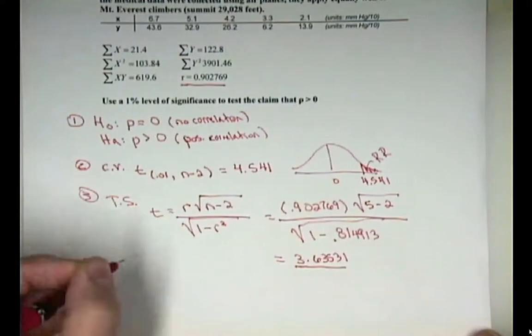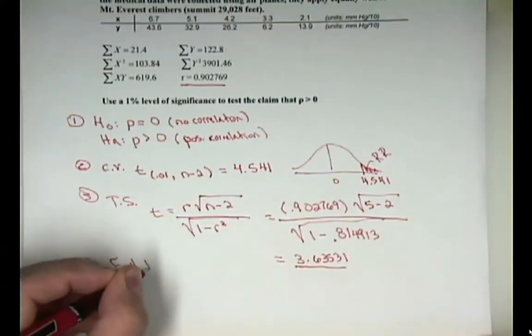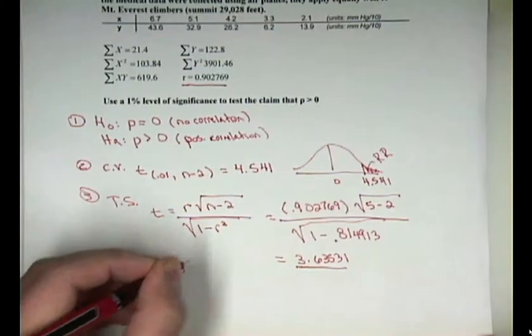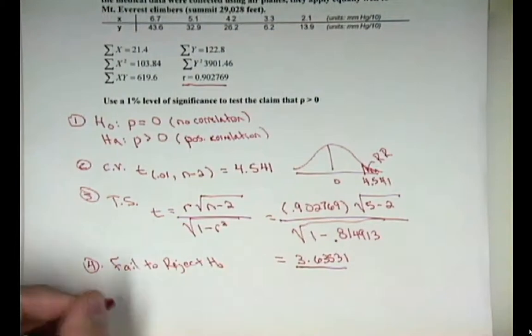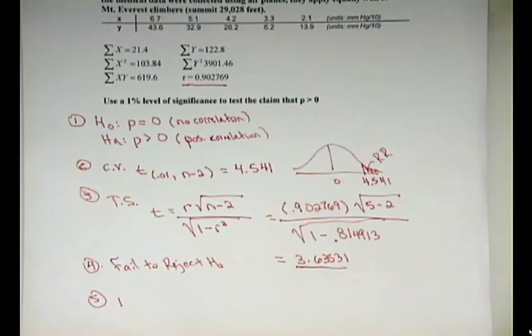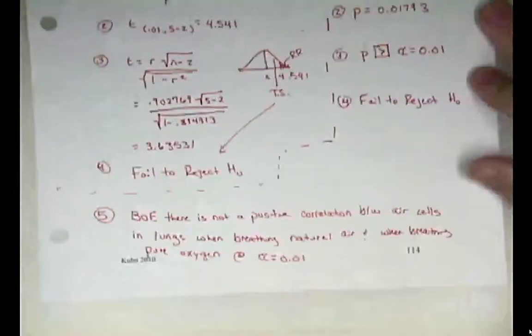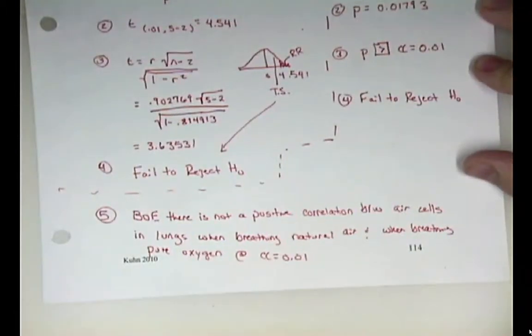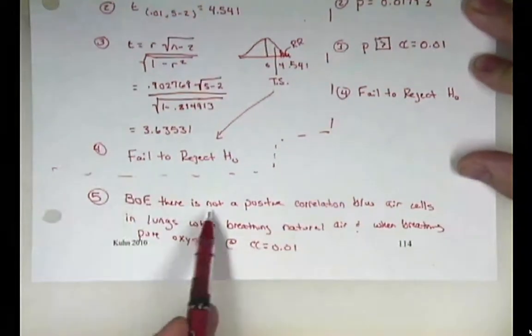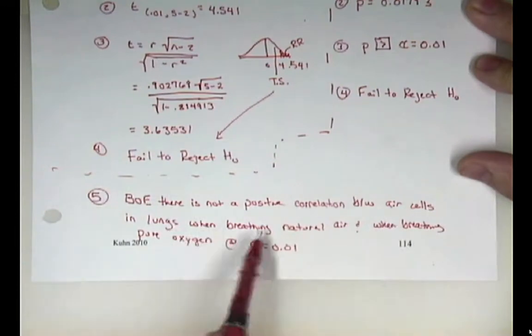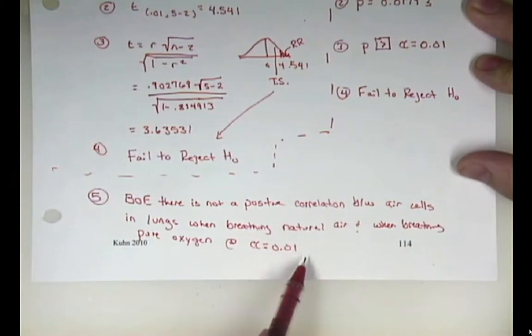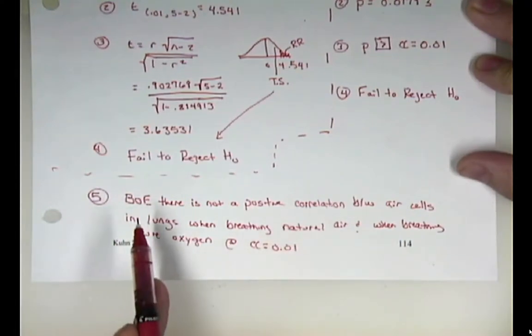So step four is your decision. So we are going to fail to reject H naught. Step five, of course, is to write your conclusion. So we will write our conclusion. And instead of writing it out and covering it all up with my hand, I'll show you my one that I did previously. Based on the evidence, there is not a positive correlation between air cells in the lungs when breathing natural air and when breathing pure oxygen at alpha equals .01. So that's your conclusion. And that's the critical value method.